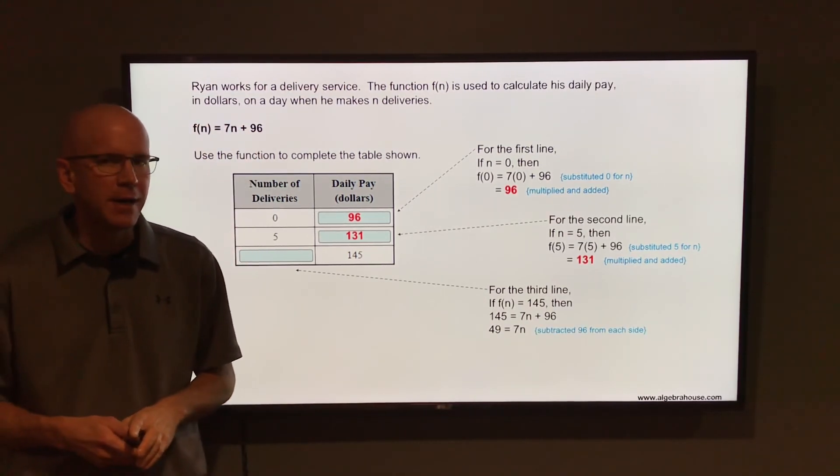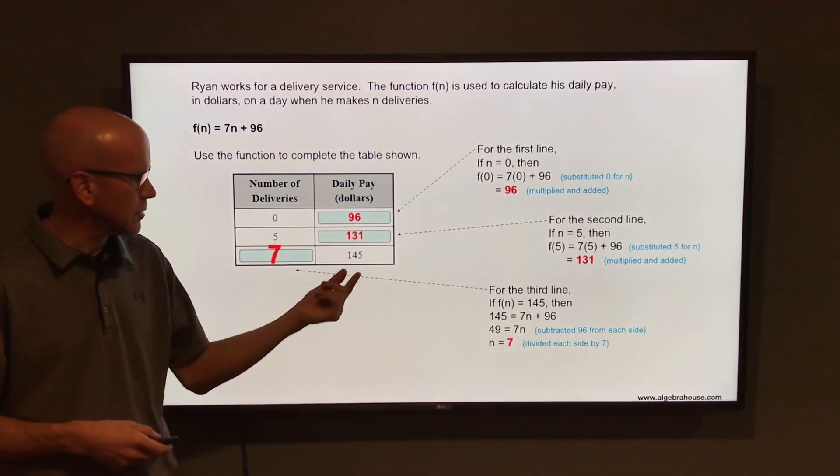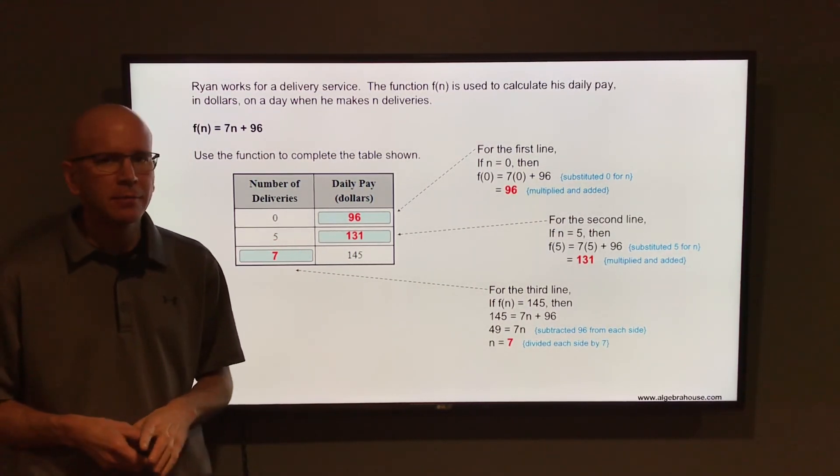Then divide each side by 49, n equals 7. So to make 145 dollars, he has to make 7 deliveries.